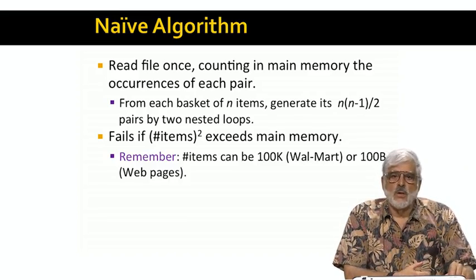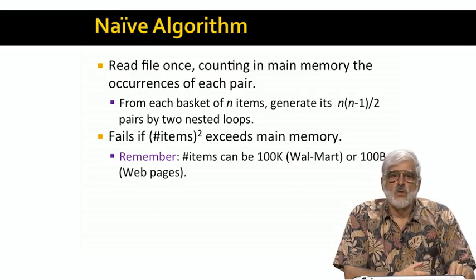If we need four byte integers to count, then we need twice that square. And just to recall, the typical number of items, if you're Walmart, the number of items is about 100,000, so you might be okay. But if you're dealing with items as web pages, then you're definitely not okay.